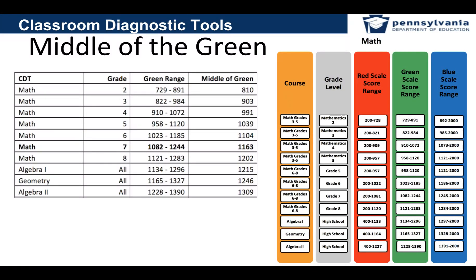We have charts that show the middle of the green — they've already been calculated for you. For math grade 7, 1163 is the middle of the green, and 1202 is the middle of the green for grade 8. When students hit that middle of the green number, they're on track to proficiency. It could also be a goal or target to hit over the course of the school year.